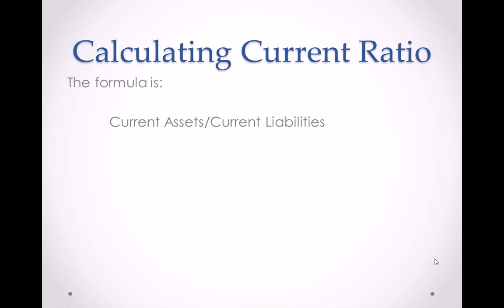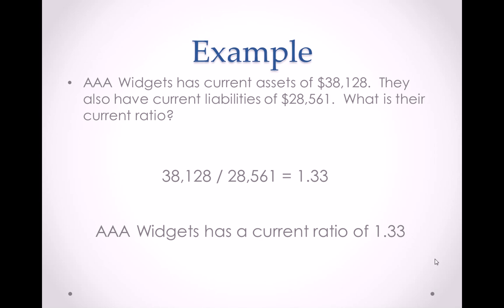Let's take a look at a real world example. The company AAA Widgets has current assets of $38,128. They also have current liabilities of $28,561. What is their current ratio?